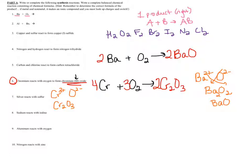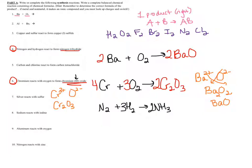Similarly, if you have two non-metals reacting, I might give you the product in name form. For example, number four: nitrogen and hydrogen react to form nitrogen trihydride. Nitrogen by itself is N₂ (diatomic); hydrogen by itself is H₂ (diatomic). Nitrogen trihydride is NH₃ — the prefix 'tri' tells me there are three hydrogens. For a molecular compound named with prefixes, there are no charges to look up. Then balance: put a 2 in front of NH₃, giving six hydrogens, so put a 3 in front of H₂.